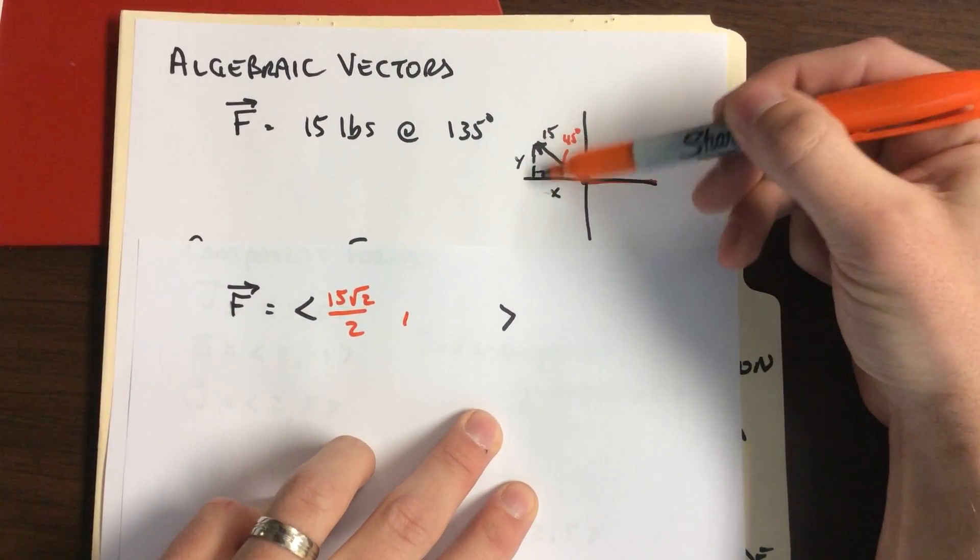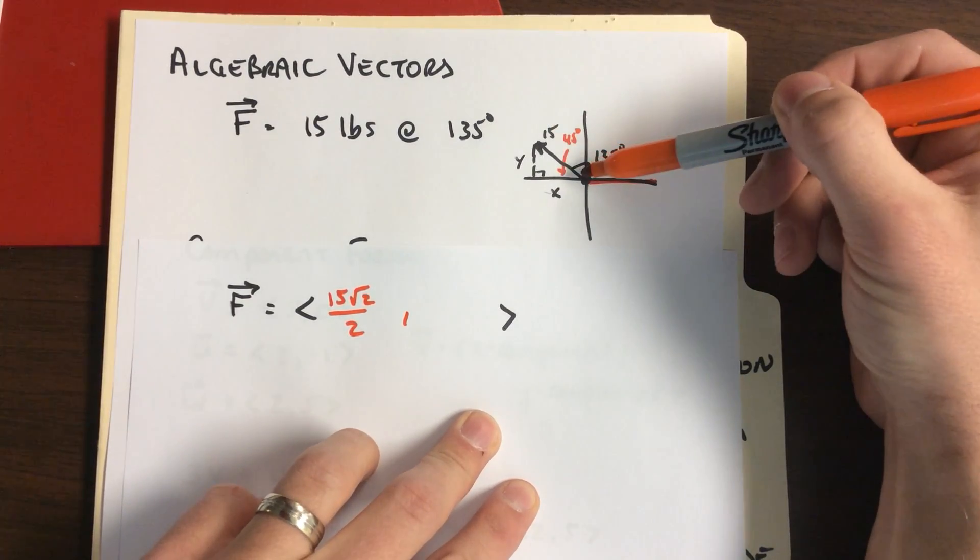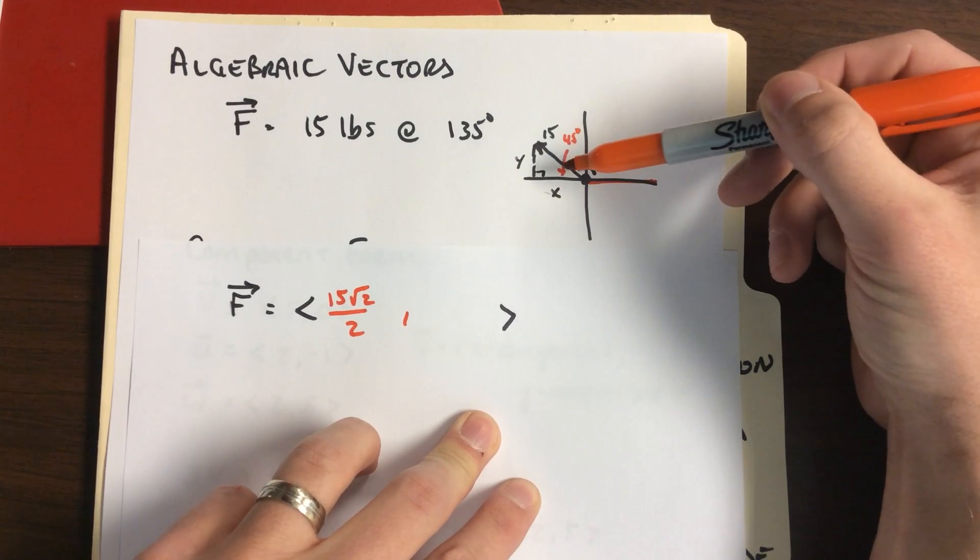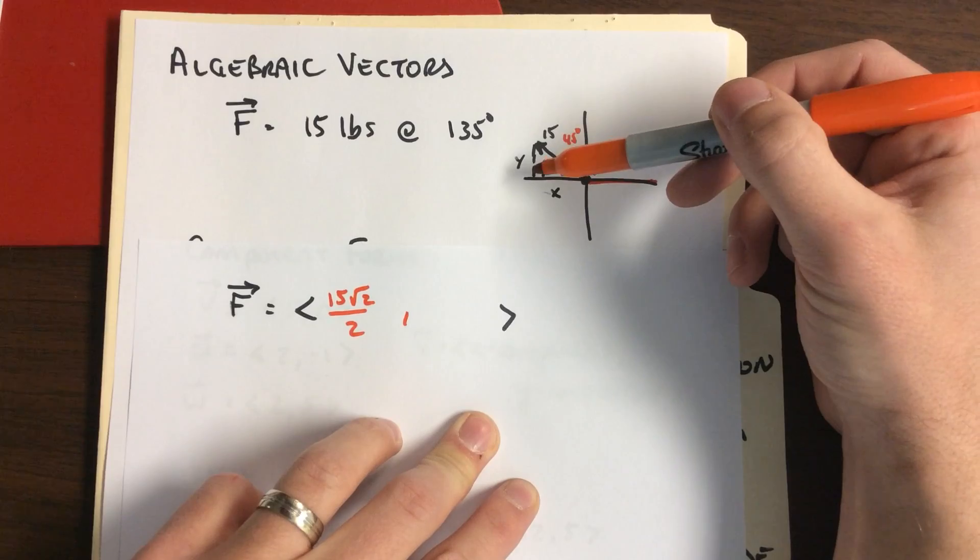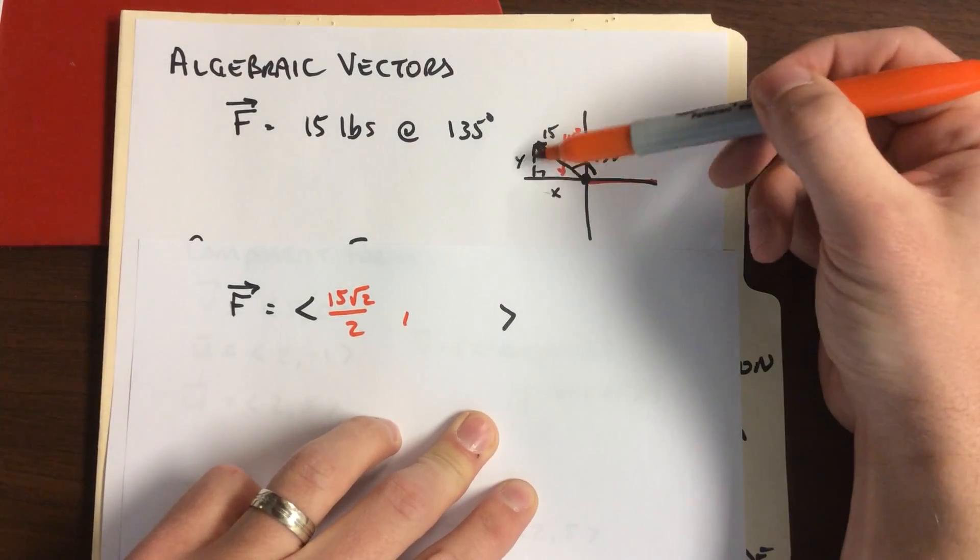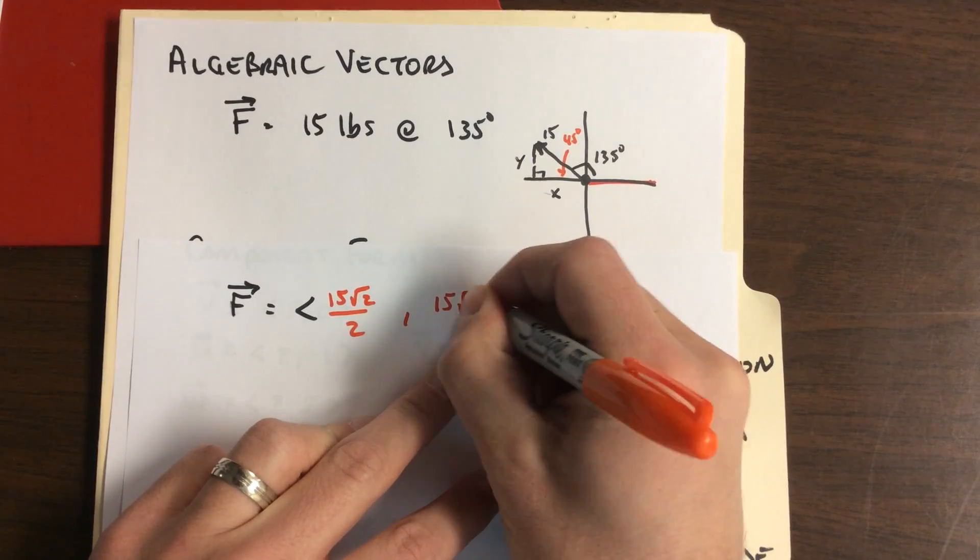The vertical component, the y, how do we find the vertical component? Sine. What's the sine of 45? Root 2 over 2, unit circle. Root 2 over 2 times 15, we've got 15 root 2 over 2.